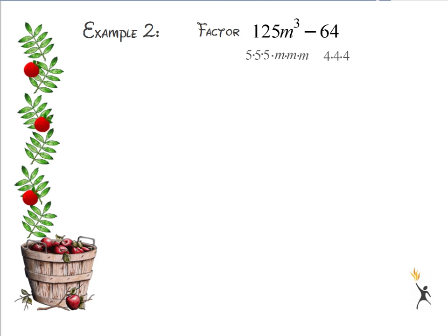If I break this down, the cube root of my first term has a 5 and an m in it. And the cube root of 64 is just 4. So I'm going to use 5m and 4 in my factors.